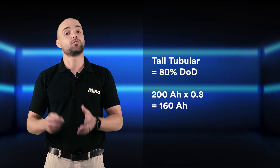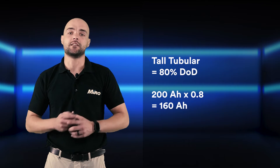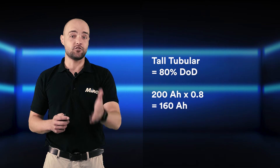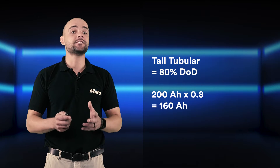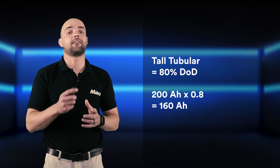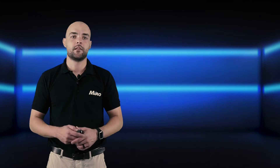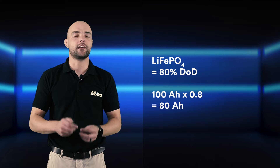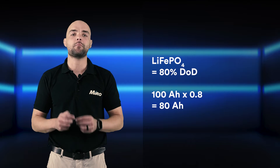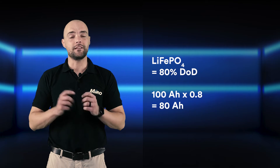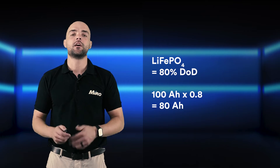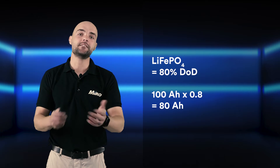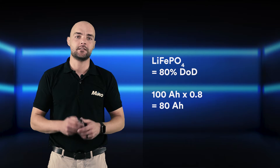Our tall tubular battery supports an 80 percent depth of discharge, so on a 200 amp hour battery you have 160 amp hours of usable capacity. The same principle applies to our lithium battery — for example, the battery is a 100 amp hour battery but can also be discharged to 80 percent, providing 80 amp hours of usable capacity.